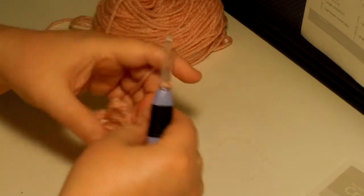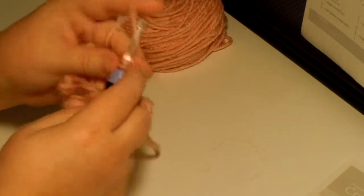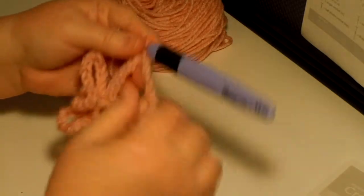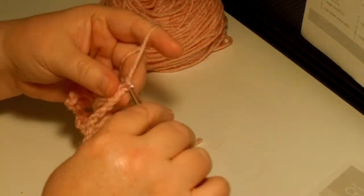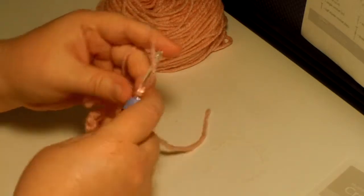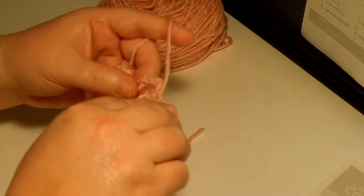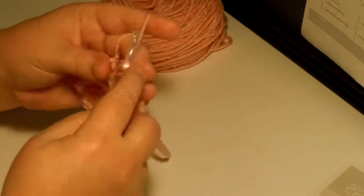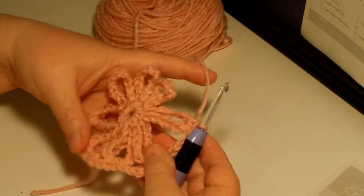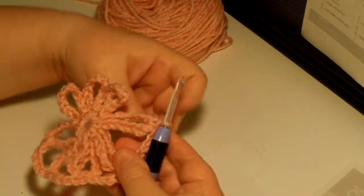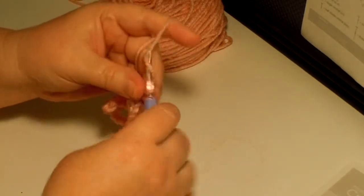We do a single crochet in the chain eleven space there and that pretty. Keep on going, one, two, three, four, five. This in here, single crochet, easy peasy. We're getting there, only a few more.